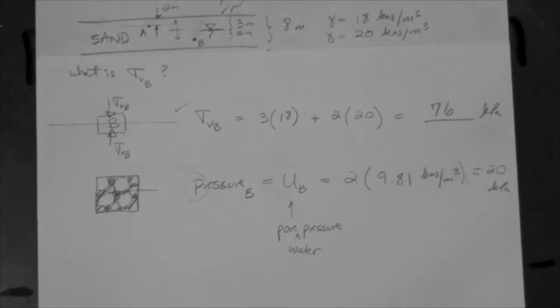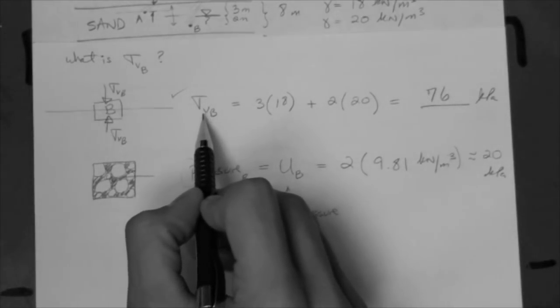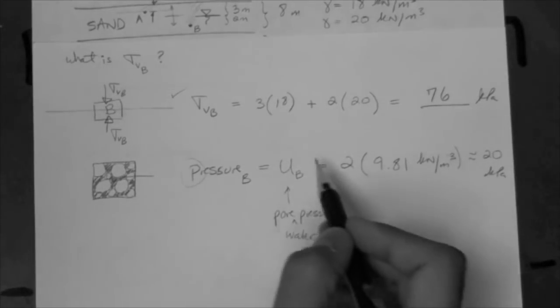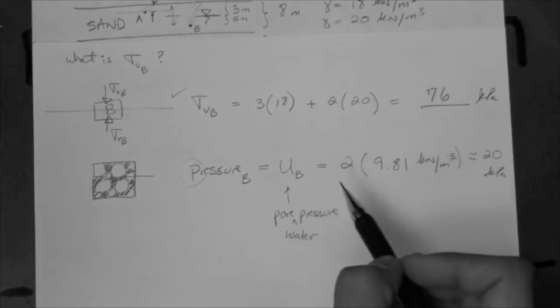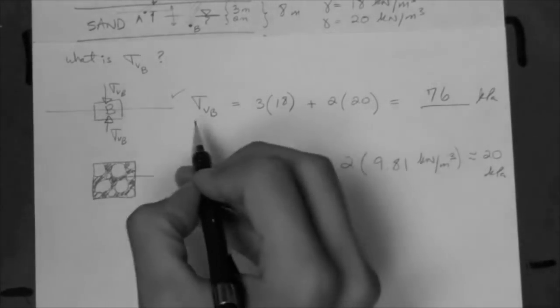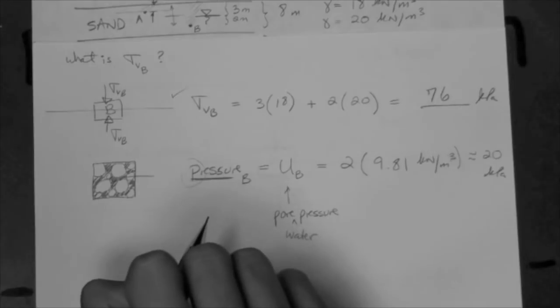You may ask: I know that this stress is acting in the vertical direction on the horizontal plane as shown here — what about the pressure? Is the pressure acting vertically? The answer is yes, but the pressure is also acting sideways — it's acting in every direction the same. That's why we don't have a little v for pressure. Pressure has a definition: the word pressure means that the stress is the same in every direction. So we give it just one letter — the letter P in fluid mechanics, or the letter U in our case.